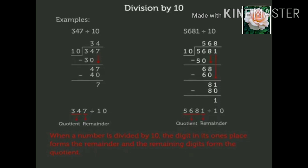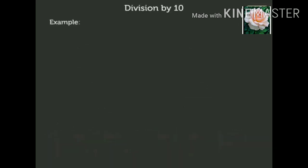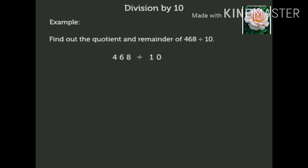Now let us solve one more example without actual division. Find out the quotient and remainder of 468 divided by 10. We already know that the digit in the ones place of the dividend forms the remainder. Thus, here 8 is the remainder. Now the remaining digits form the quotient. Thus, here 46 is the quotient.